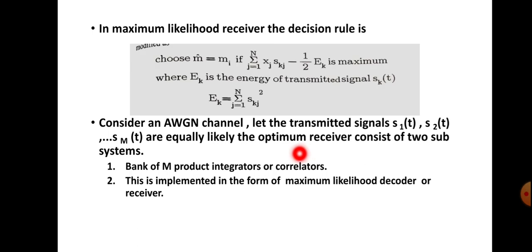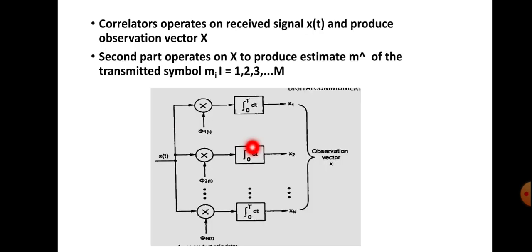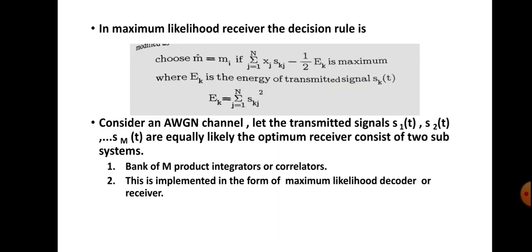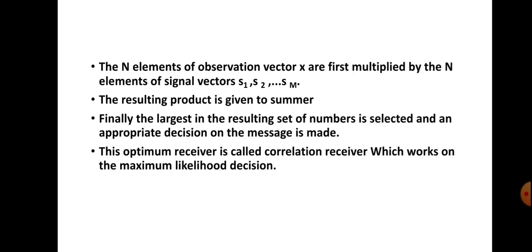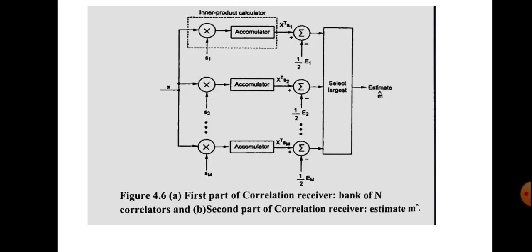The optimum receiver for receiving the signals consists of two subsystems. The first subsystem is the bank of M product integrators or correlators, shown here. So the first part of the correlation receiver contains a set of correlators. The second part is implemented in the form of a maximum likelihood decoder or receiver, based on the maximal likelihood rule.